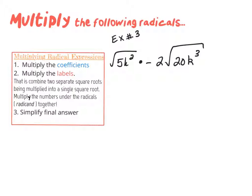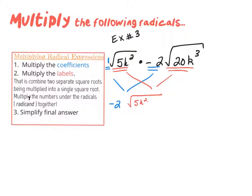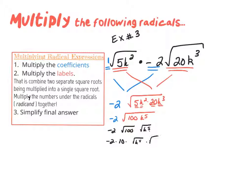In example three, we multiply −2√(5k²) times √(20k³). Coefficients: −2 times 1 is −2. Labels join: √(5k²) times √(20k³) gives √(100k⁵). Under the square root, 5 times 20 is 100 and k² times k³ is k⁵. We simplify: √100 is 10, and √(k⁵) breaks into √(k⁴) times √k — since k⁴ is a perfect square, √(k⁴) is k². Our final answer is −2 times 10 times k²√k, which is −20k²√k.